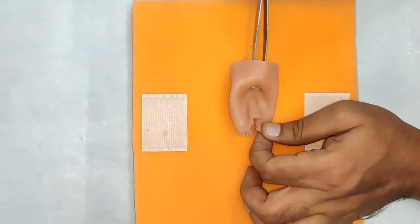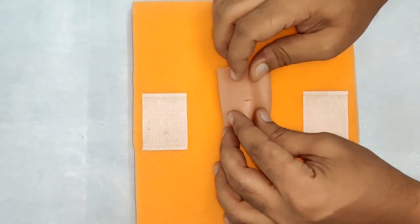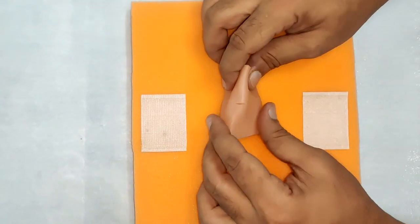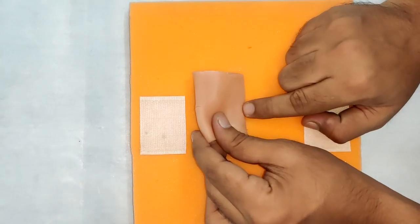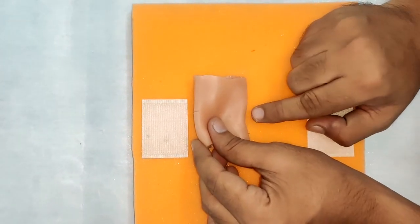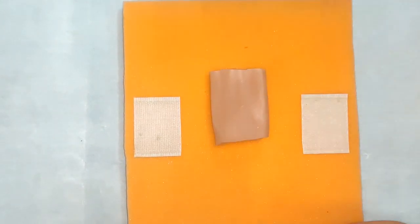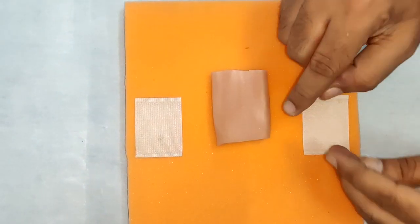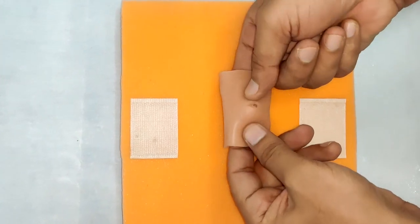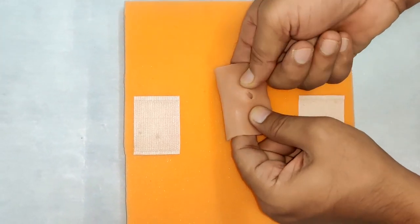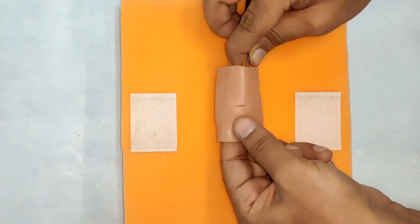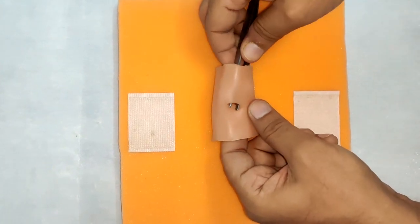Before we start suturing, there are some principles that we have to follow. If the hole is too close to the mesenteric border, we will have to resect and anastomose the two segments. But if it is on the anti-mesenteric border and a small perforation of 0.5 to 1 cm, we will go for primary closure of the perforation.